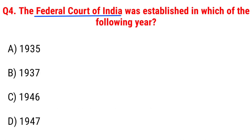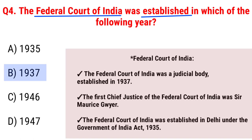Next question: the Federal Court of India was established in which of the following years? Option A, 1935; B, 1937; C, 1946; D, 1947. The right answer is Option B, 1937. Important notes: the Federal Court of India was a judicial body established in 1937. The first Chief Justice was Sir Maurice Gwyer. It was established in Delhi under the Government of India Act 1935.